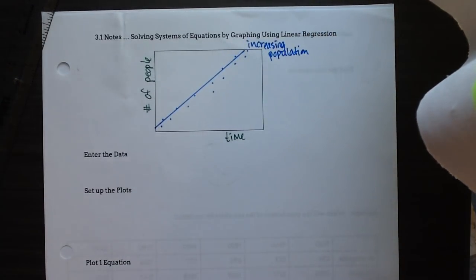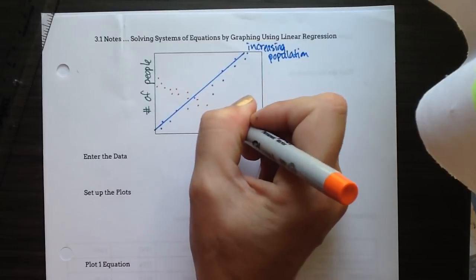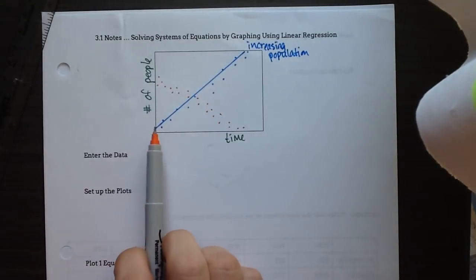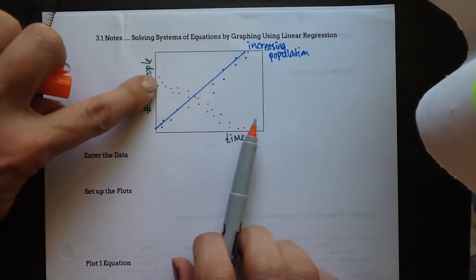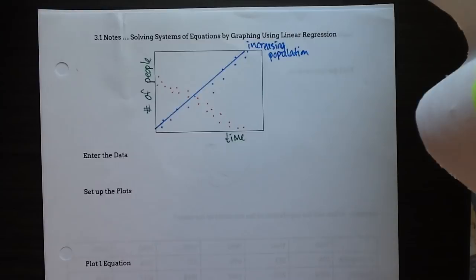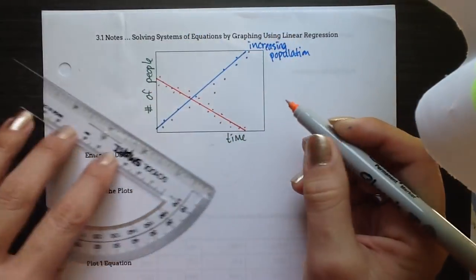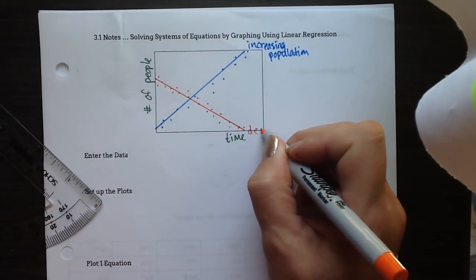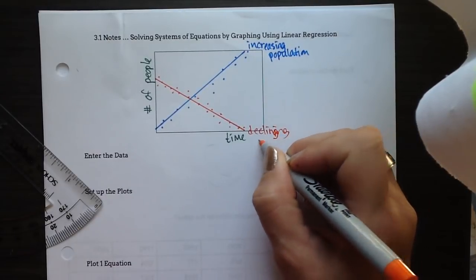I'm also going to have a trend line showing a decreasing population. As time increases, the number of people is decreasing — which is a negative correlation. That causes our line of best fit to have a negative slope. This would show a declining population.